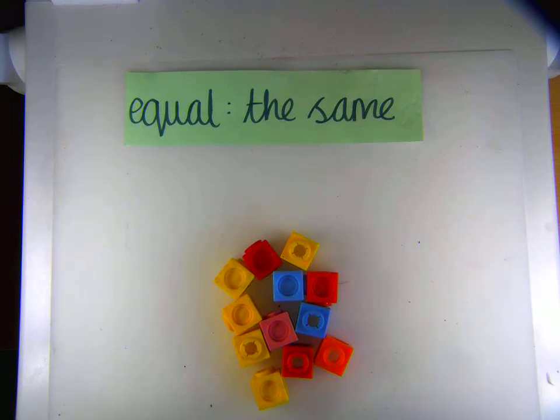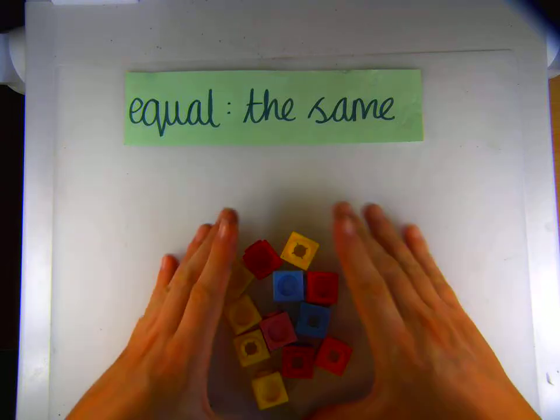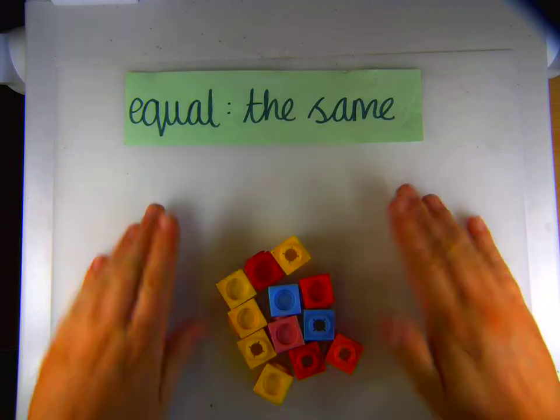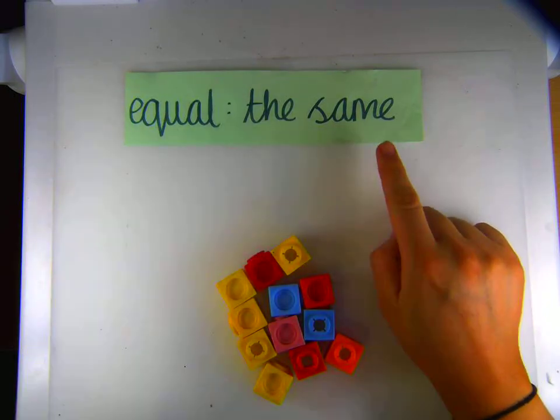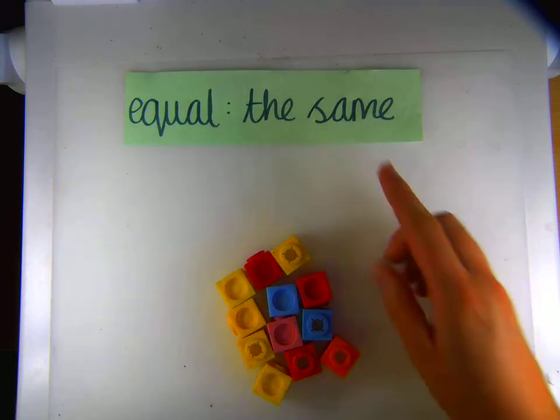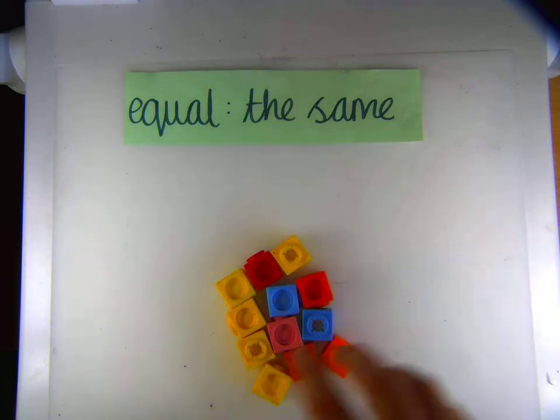So today we're going to look at equal parts, splitting a group of objects into equal parts. Now the key to remember here is that the word equal means the same. So every part needs to be the same.